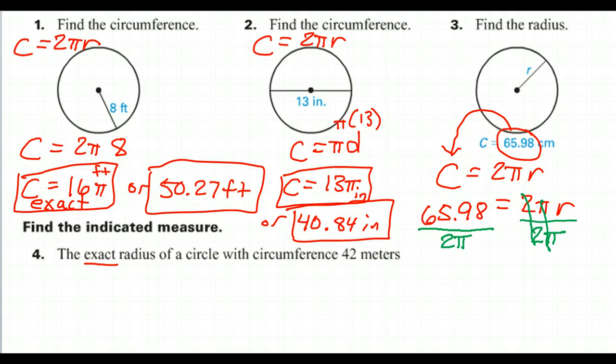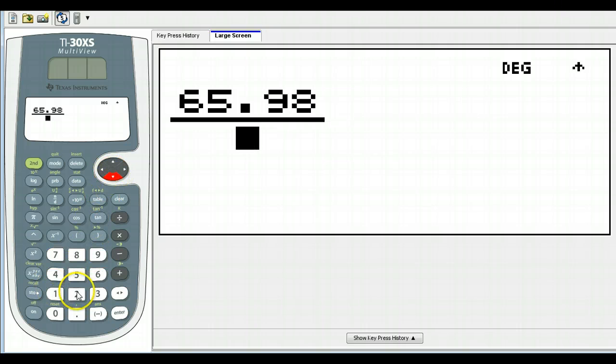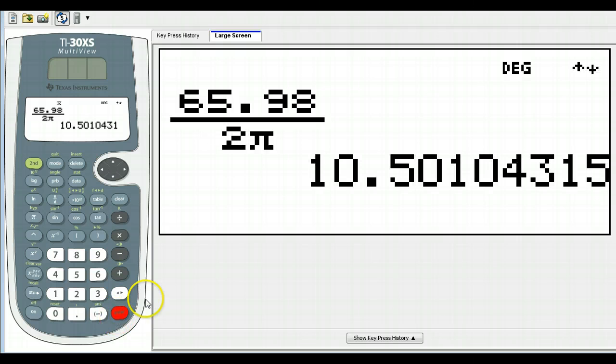So 65.98 divided by 2 pi. 65.98 over 2 pi. Kabam! I'm getting 10.50.